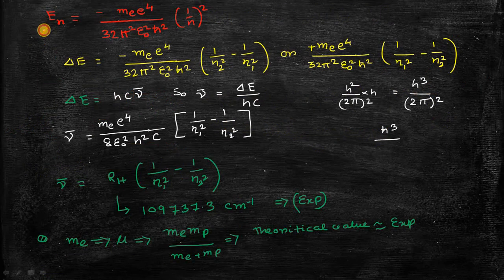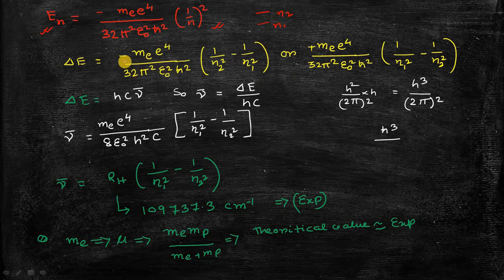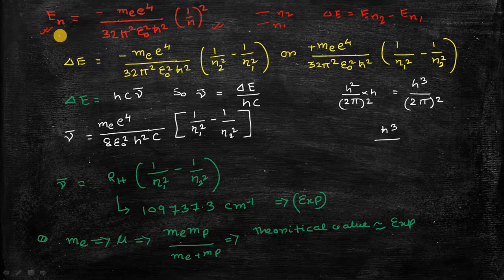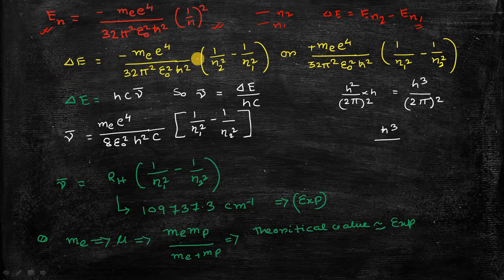The energy expression for hydrogen atom for any nth principal quantum number is as shown. If we want to calculate the energy difference between two states n1 and n2, delta E equals E(n2) minus E(n1). Substituting the values for n2 and n1 respectively and subtracting, the energy gap equals a constant with a minus sign into (1/n2² minus 1/n1²).